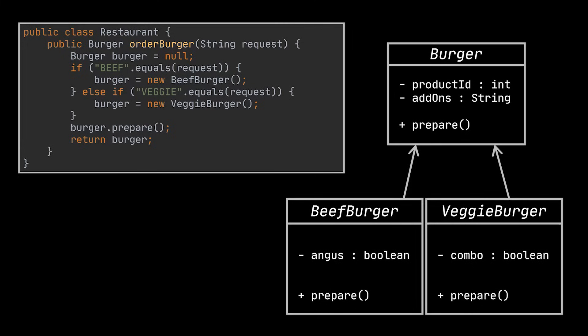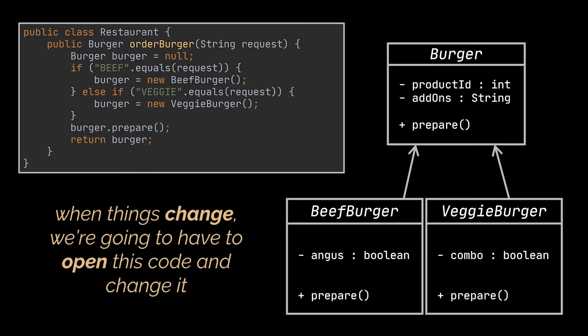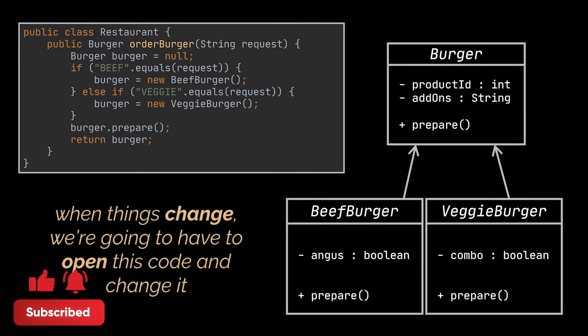Our application looks complete now. But when we see code like this, we know that when things change — like if we add new recipes to our delivery menu or more products to our restaurant — we're going to have to open this code and change it. And that violates our open-closed and single responsibility principles. We'll also end up writing the same piece of code in several places in the app, making things even worse. So what do we do? Well, let's look at what varies and encapsulate it.